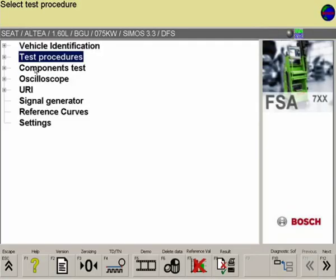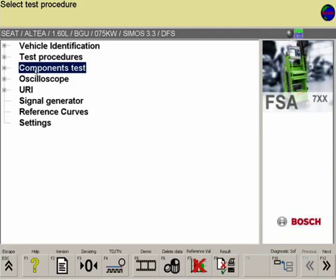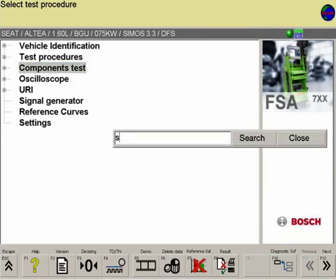First use Ctrl and F to call up the search function. Type in Injection Valve. The software will automatically find the item Injection Valve in the component test under fuel supply.